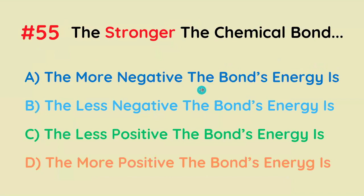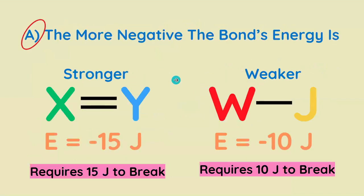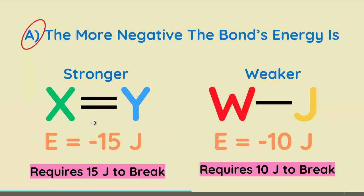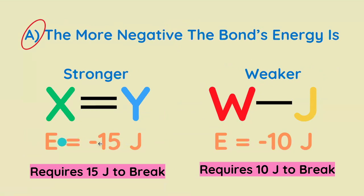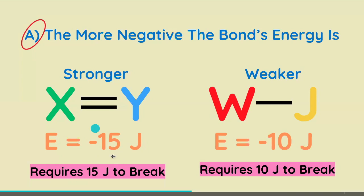The stronger the chemical bond is, the what the bond energy is? It's actually the more negative the bond energy is. There's a larger deficit relative to zero, and we have to add the exact amount of positive energy to break that bond — however much energy gets us to zero joules, and the bond is broken.